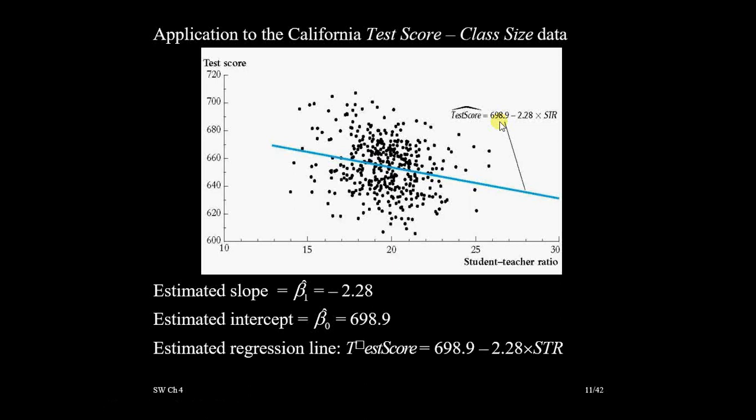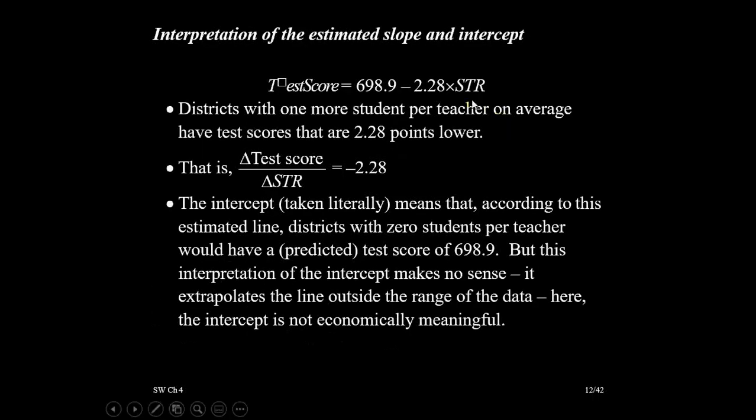What is their interpretation? Let's see. If you reduce class size by one, test score of students improves by 2.28 units. Or in other words, if you increase class size by one, test score decreases by 2.28 units.